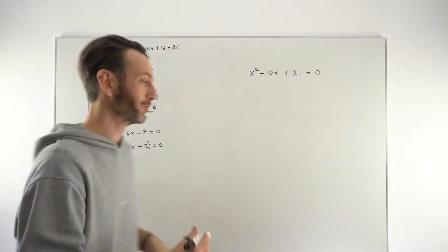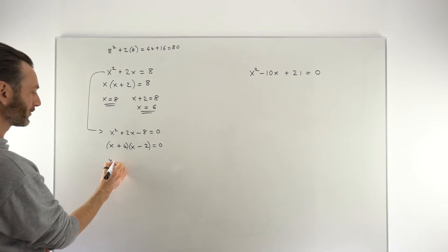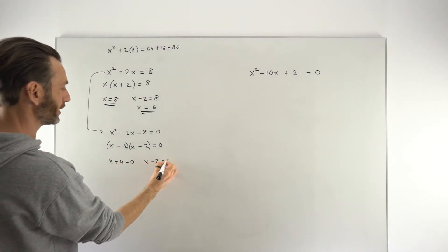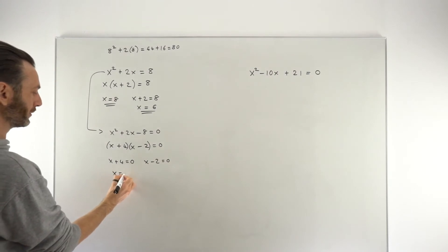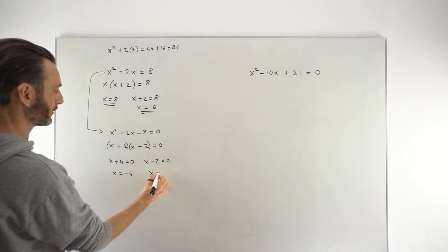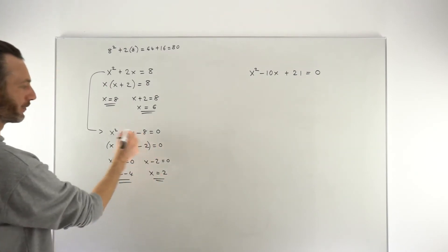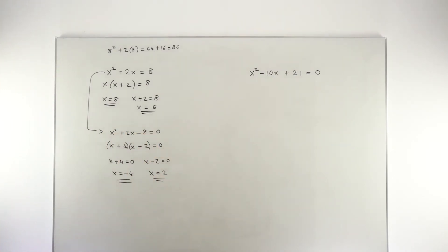To get x plus 4 equals 0 and to get x minus 2 equals 0 given solutions of x equals negative 4 and x equals positive 2 and it should be that if we plug those back into the original equation the equation is satisfied.